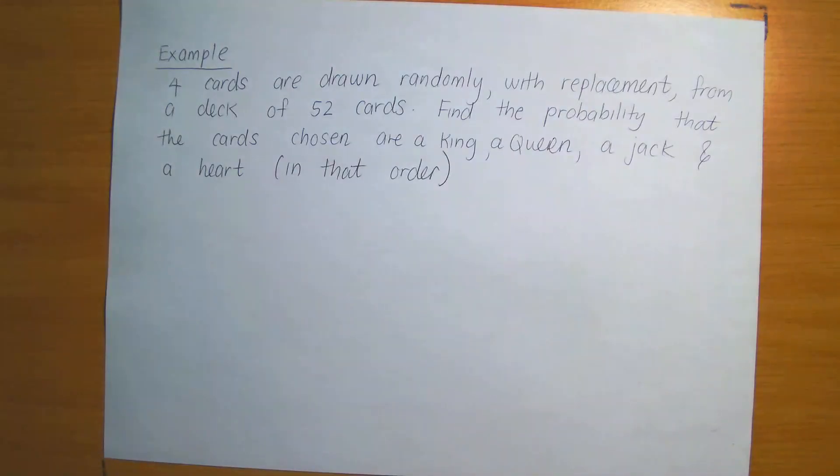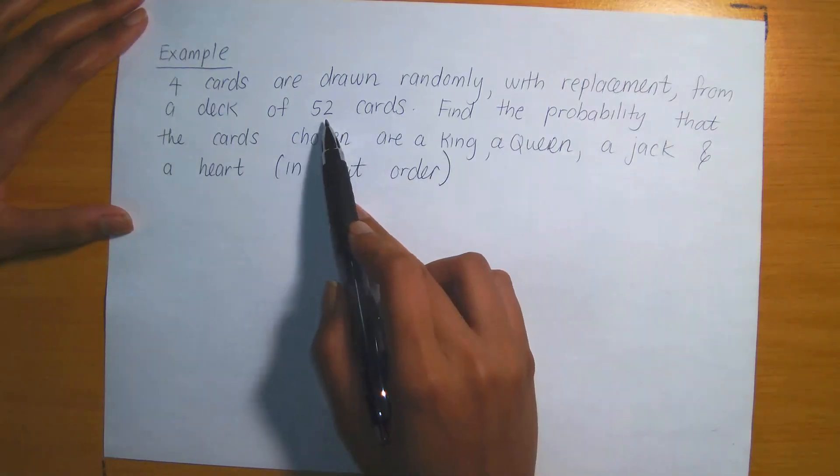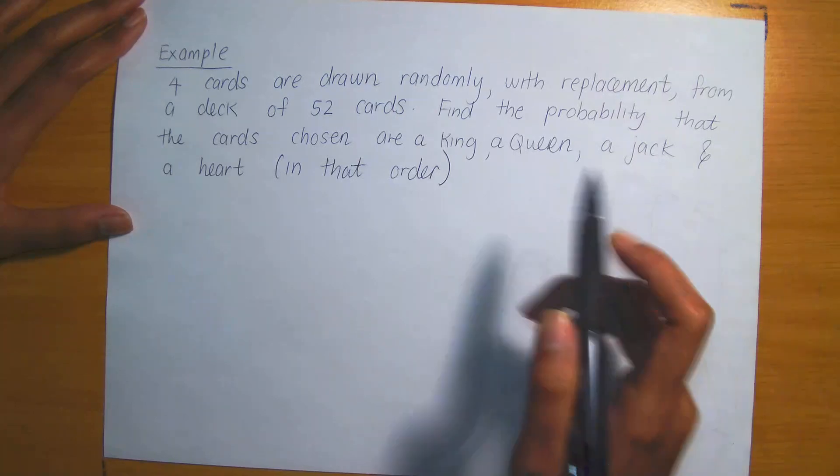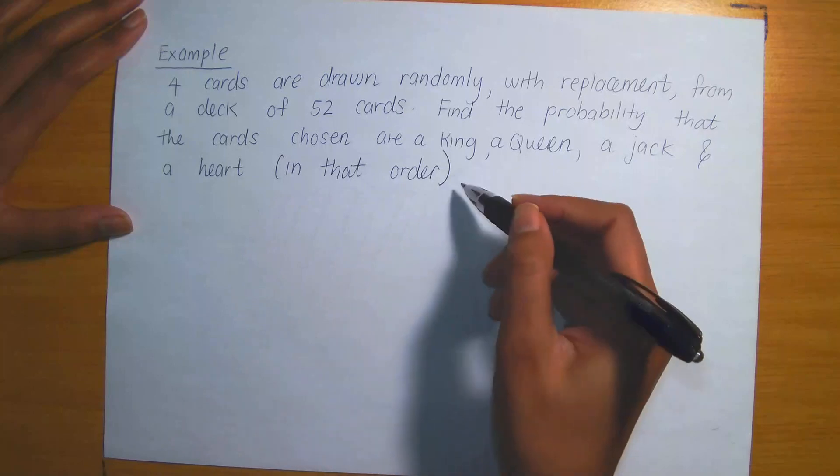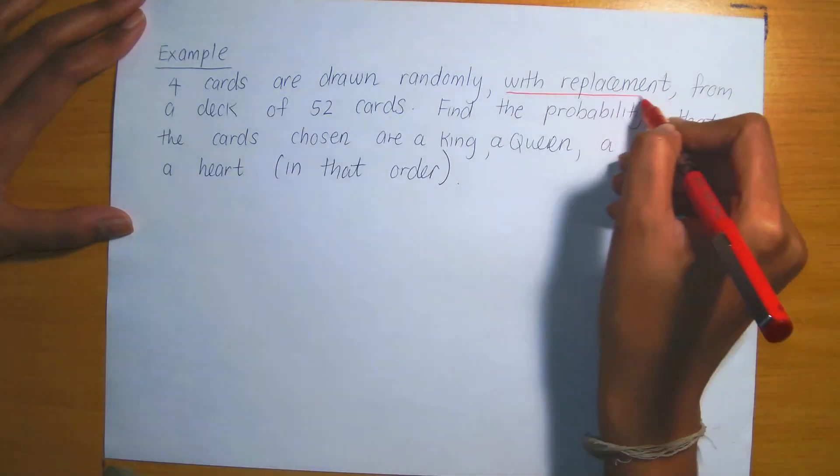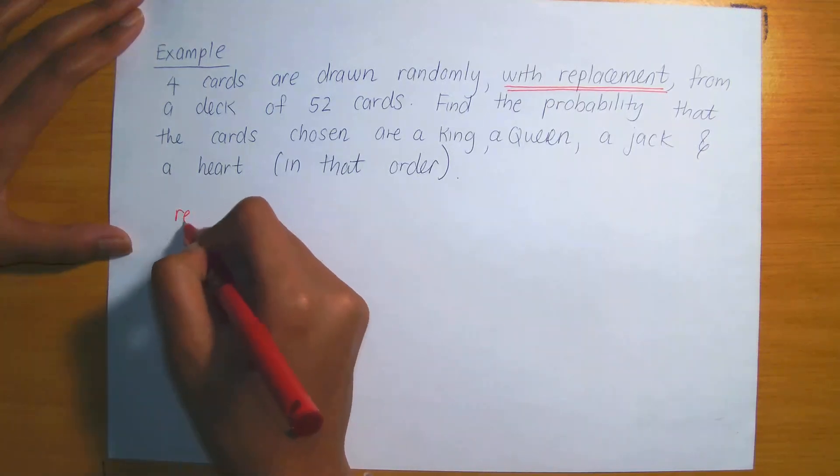Let's look at a brief example. We are told that four cards have to be randomly drawn from a deck of 52 cards. And what's happening is that this is done with replacement. The question is, find the probability that the cards which are chosen, remember we are choosing four, will be a king, a queen, a jack, and a heart. So those must be the four cards chosen, and it must be chosen in that order. Now the key piece of information in here is that this is occurring with replacement.